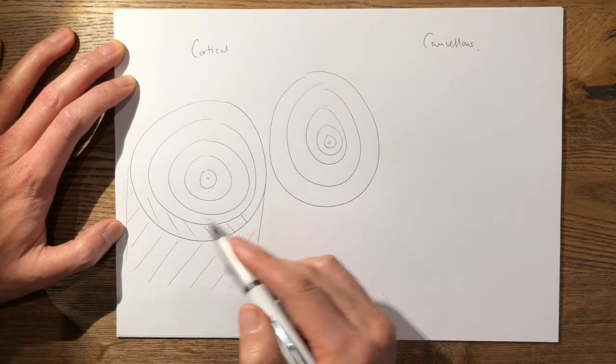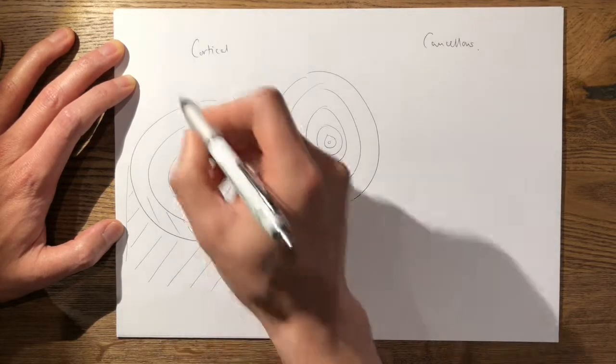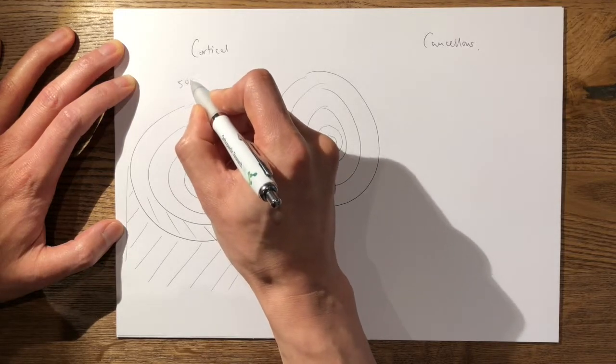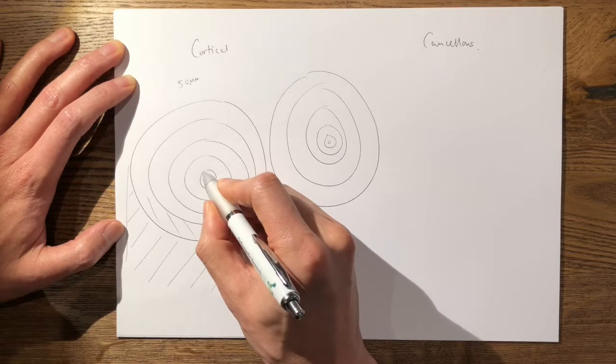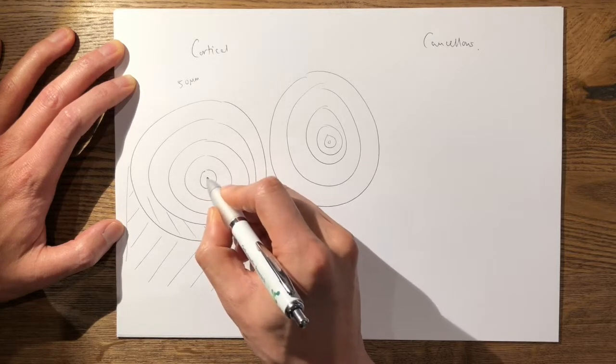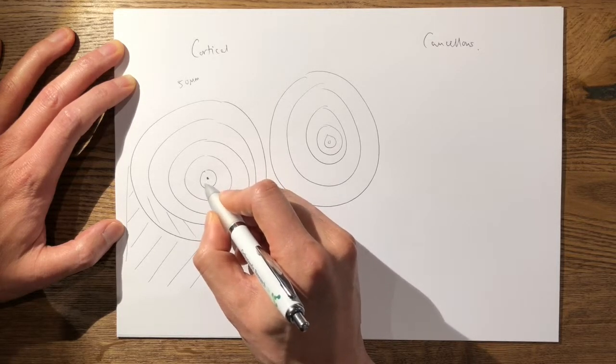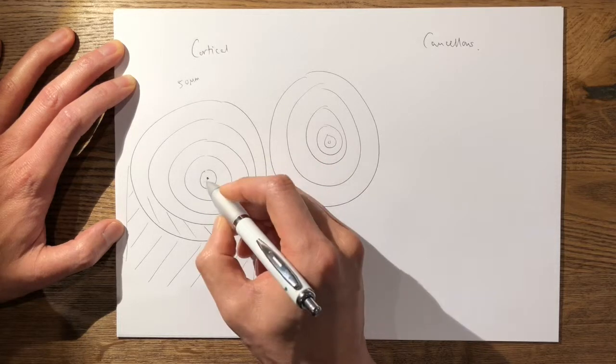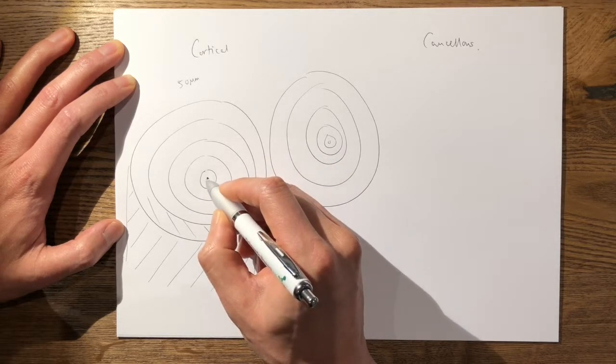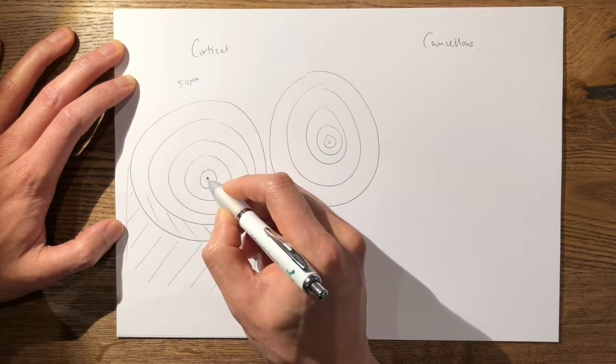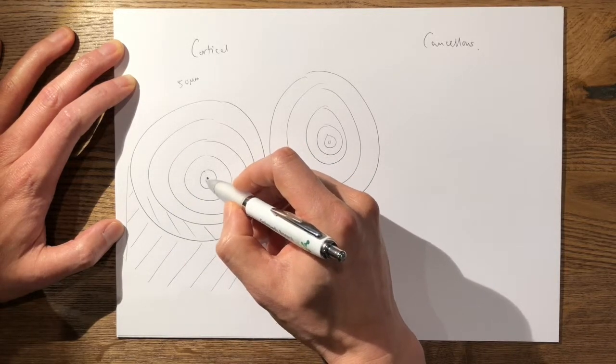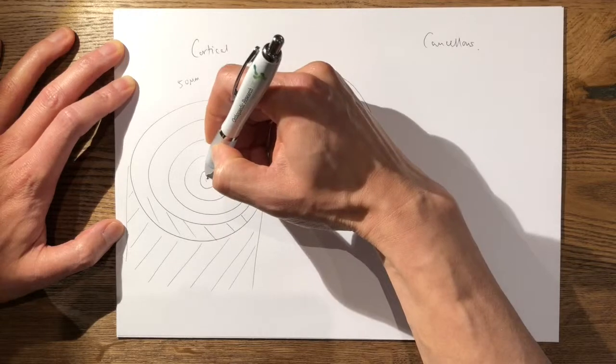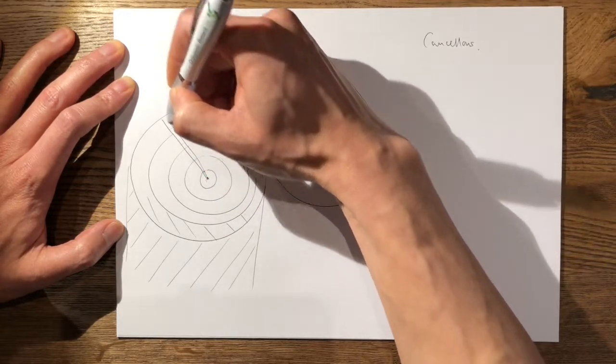These osteons are approximately 50 microns in diameter. The central portion is a Haversian system which contains the artery, the vein, and the nerves—this is a high pressure system of blood flow. Perpendicular to this you have separate channels.